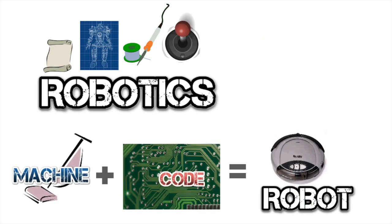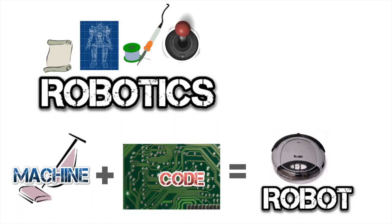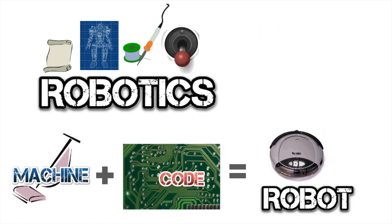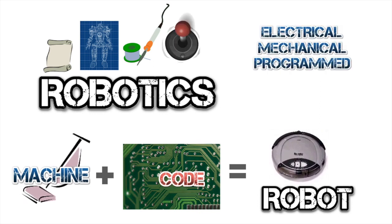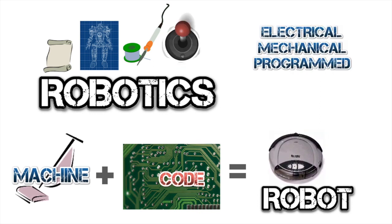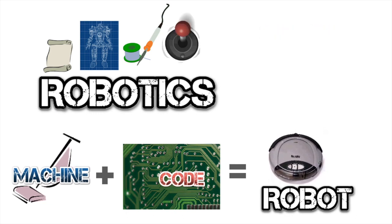Well, a simple way to think about it is if you take a machine, combine it with code, then the result is a robot. In this case, it's basically a vacuum cleaner mixed with code getting a self-cleaning Roomba.